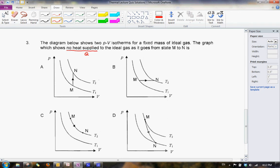So what does it mean by no heat supplied? It means Q equals to zero, and previously in our lectures, we have seen that this is known as the adiabatic process.